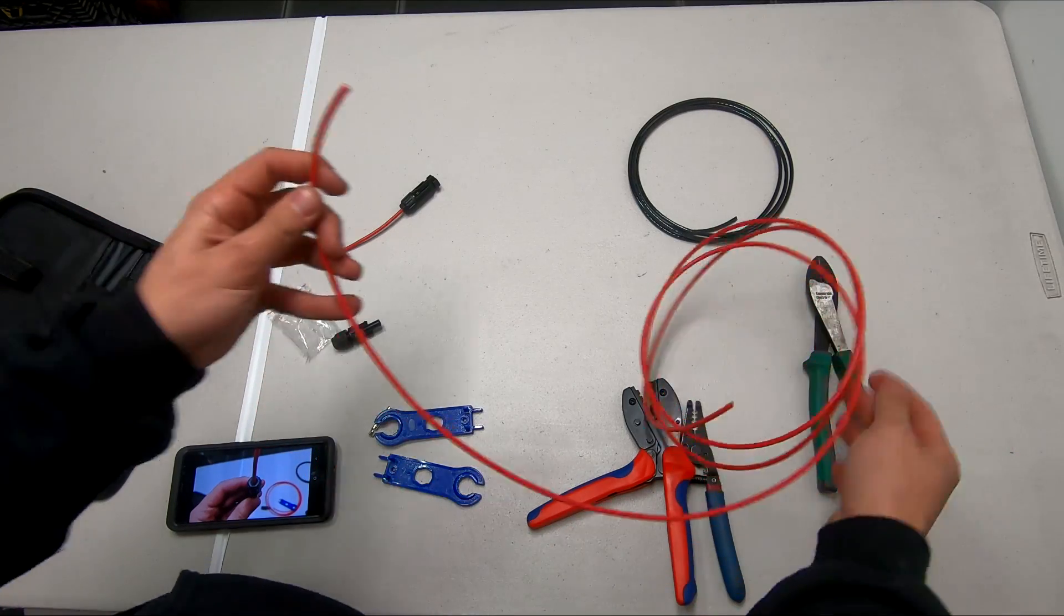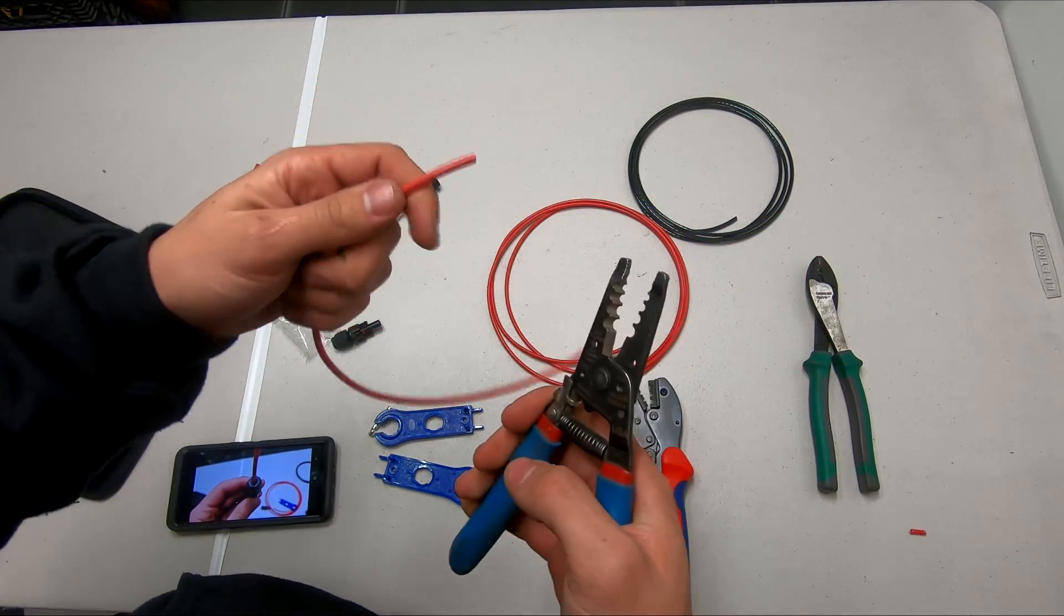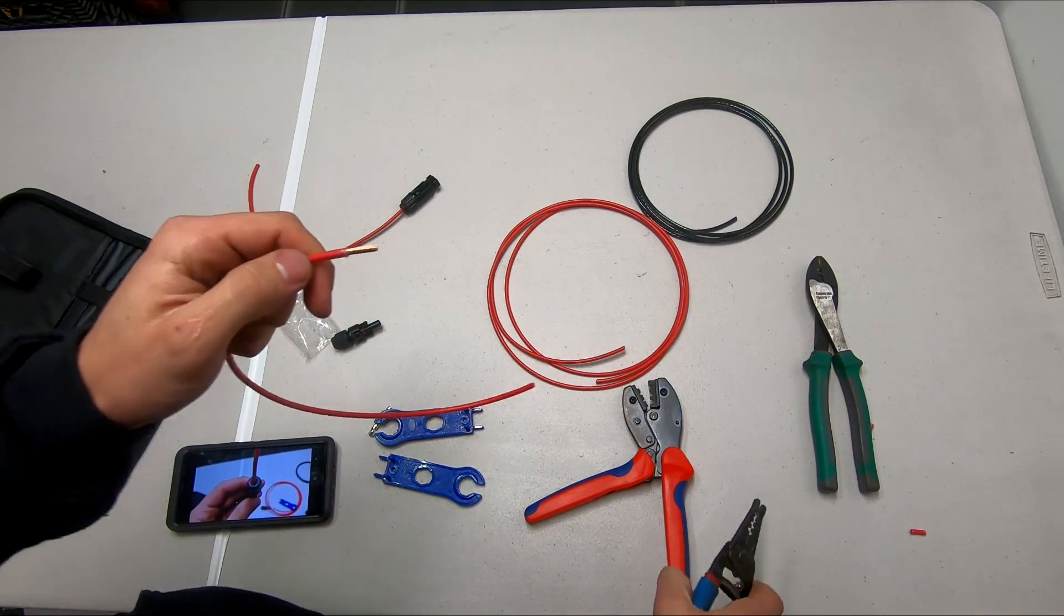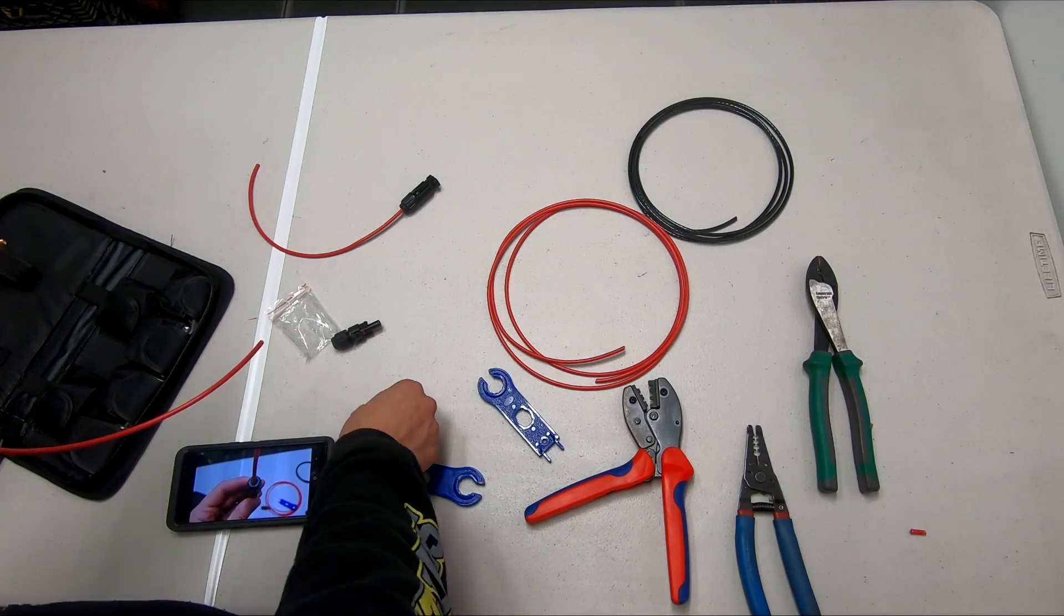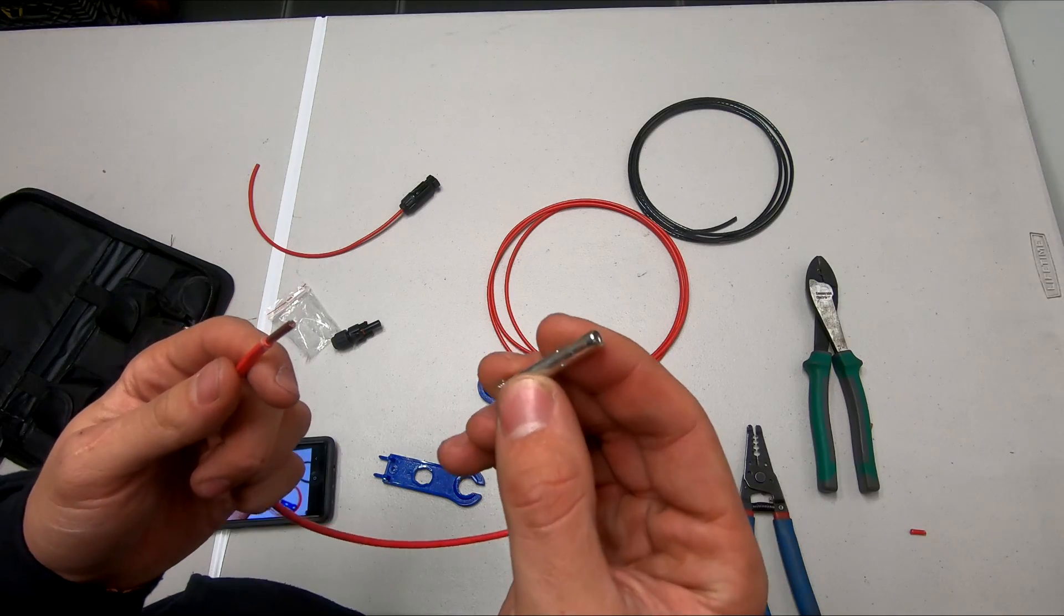Now I'm going to take another section of wire and show you what happens if you don't do this correctly. So I'm going to cut it and strip it back just like before, about a half inch of insulation.